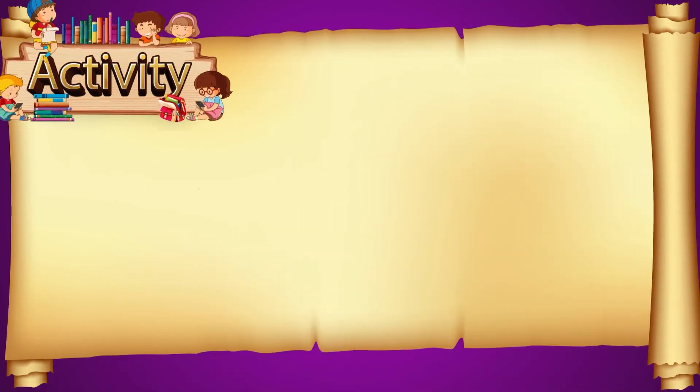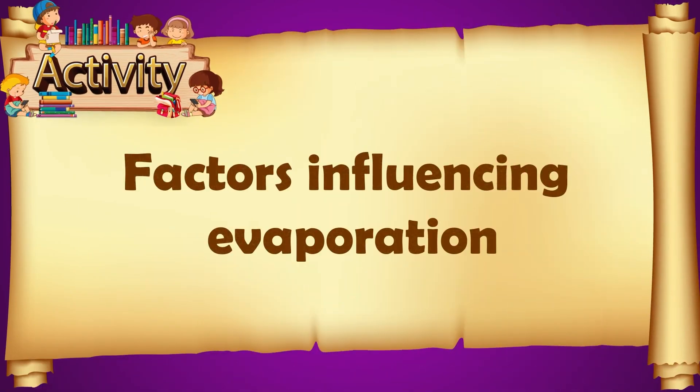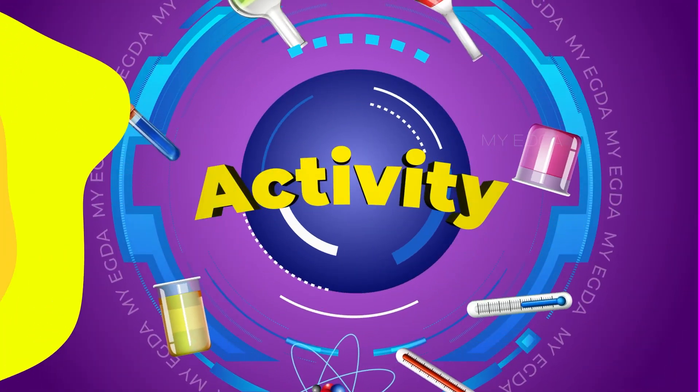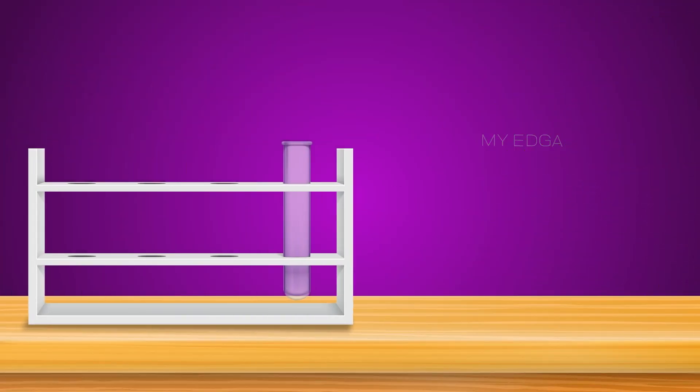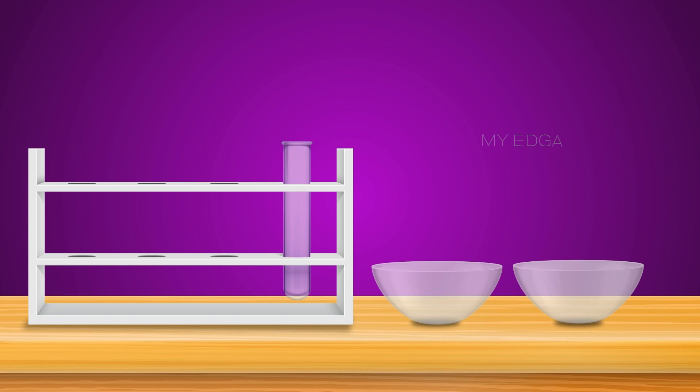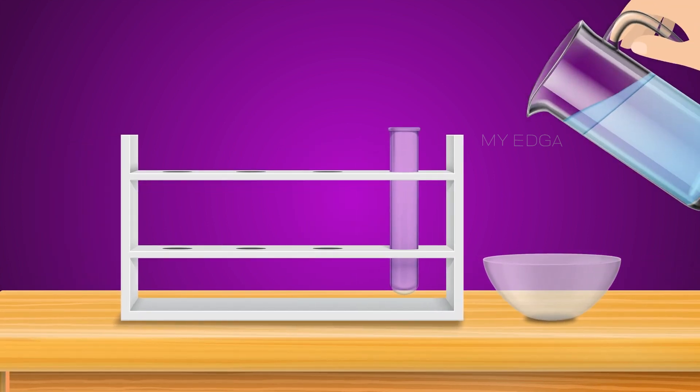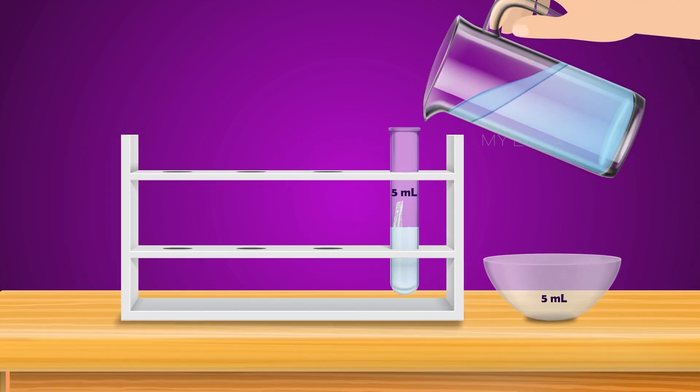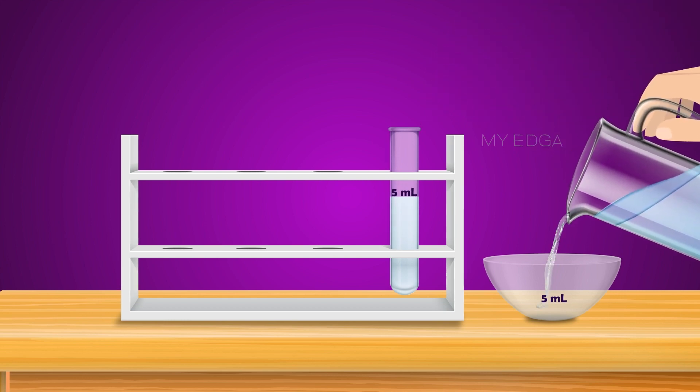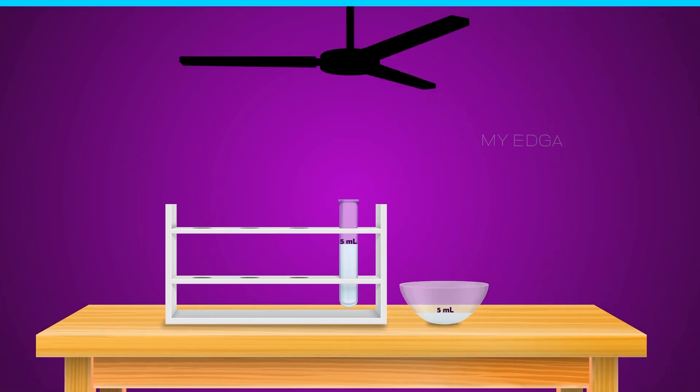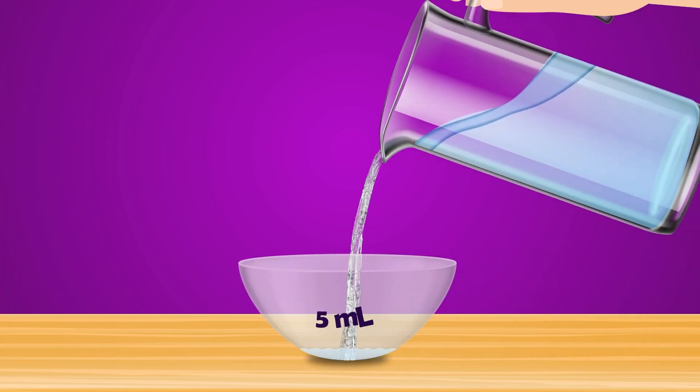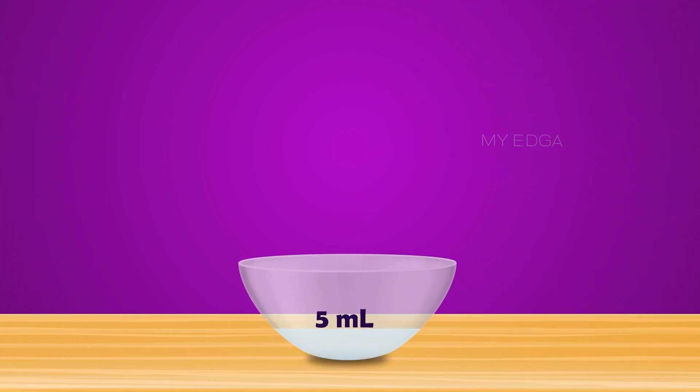Now let us discuss the factors which influence evaporation through an activity. Take a test tube and two open china dishes. Pour 5 ml water into the test tube and a china dish and keep it under a fan.